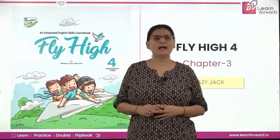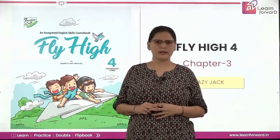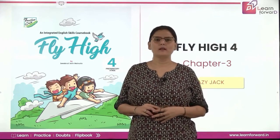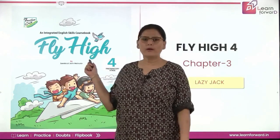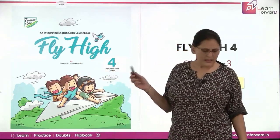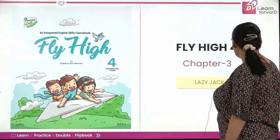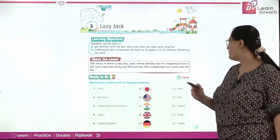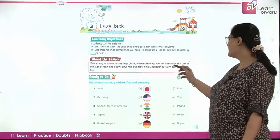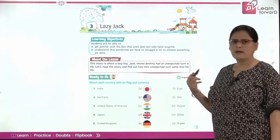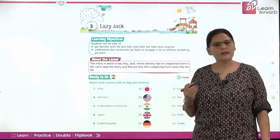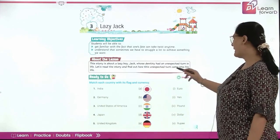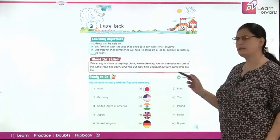Hello kids, welcome to the session at Learn Forward Platform by Feathercap. I am your English facilitator Garima Singh to make your learning easy and fun. So let's begin. Hope you all are ready with your book Fly High, Class 4. Today we will be reading Chapter 3 that says Lazy Jackie — about a boy named Jackie whose destiny had an unexpected turn in life. Let's read the story and find out how this unexpected turn came to his life.